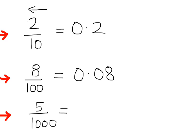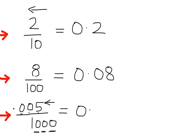For 8/100: two zeros at the bottom, but only one digit on top, so make it a two-digit number by writing 08. Count two digits from right to left and put the point — answer is 0.08. For 5/1000: three zeros at the bottom, but only one digit, so make it a three-digit number: 005. Count three digits and put the point — answer is 0.005.